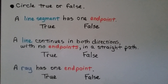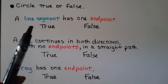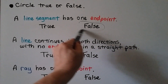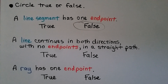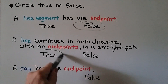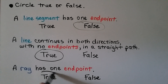Circle true or false: a line segment has one endpoint. A line segment has two endpoints, so this is false. A line continues in both directions with no endpoints in a straight path — if you said true, you're right. What about this one: a ray has one endpoint. A ray does have one endpoint and it has one arrow pointing in one direction — so if you said true, you're right.